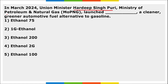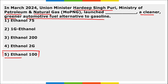Union Minister of Petroleum and Natural Gas Hardeep Singh Puri launched Ethanol 100 (E100) — a cleaner, greener automotive fuel alternative to gasoline.